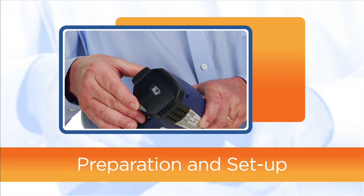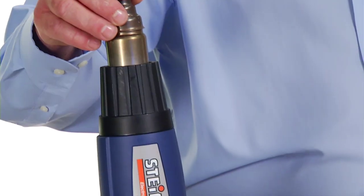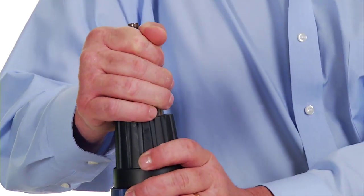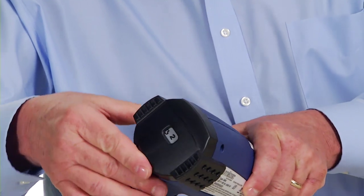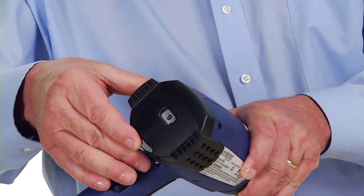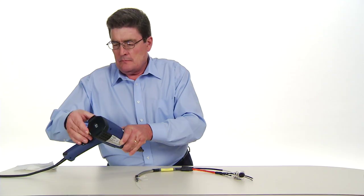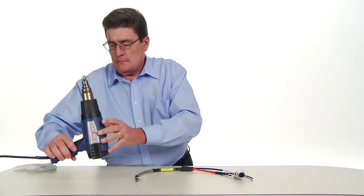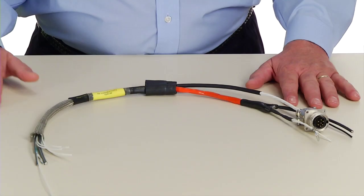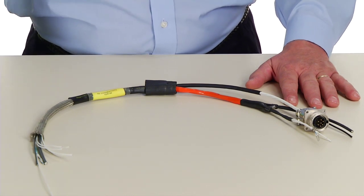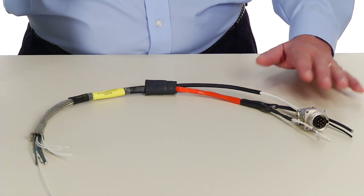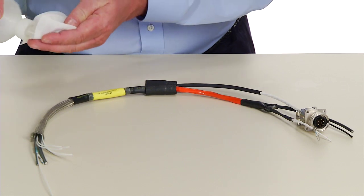To begin the installation, first preheat a Steinel heat gun fitted with a PR25 reflector. Adjust the temperature setting to 420 degrees Centigrade. Allow the gun to reach the required temperature. This takes approximately 90 seconds before installing any components in the training kit.